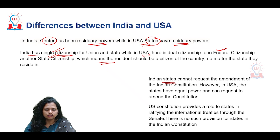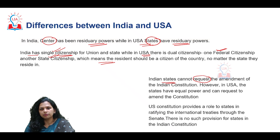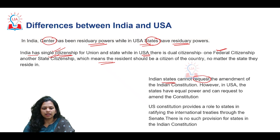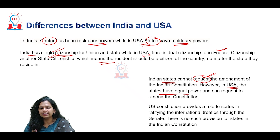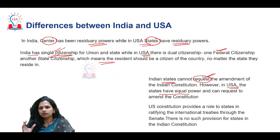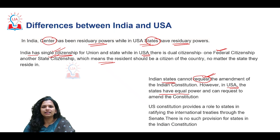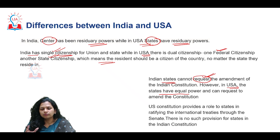Indian states cannot request amendments to the constitution on their own, though if amendments affect federal principles, ratification by half of the states is essential. In the United States, states have equal power with respect to constitutional amendments. This equality and equal division of power is what makes some political scientists consider the United States a truly federal nation, whereas India is signified as a federal system with a unitary bias — sometimes called a quasi-federal system.